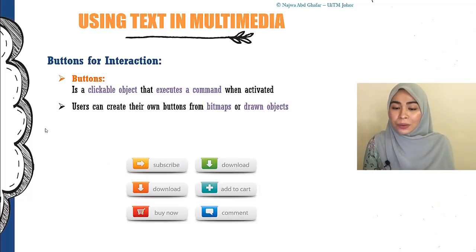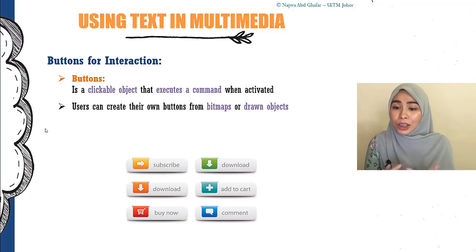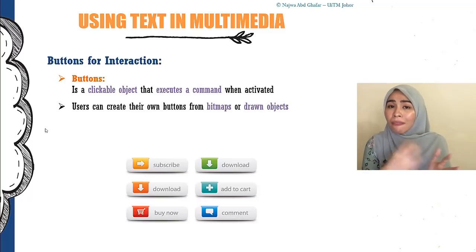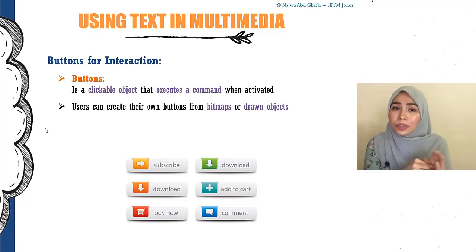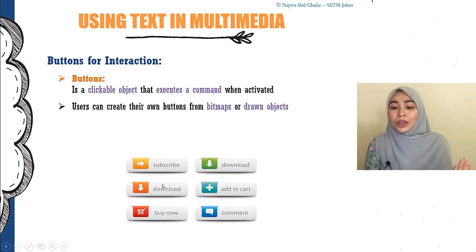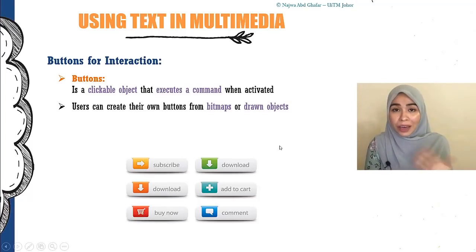Buttons are also important for interaction. A button is a clickable object that executes a command when activated — every button is an object, and if you click on it, something will happen. There is some kind of command activated when the user clicks the button. Users can create their own buttons from bitmaps or drawn objects. Since buttons are images, you can design them however you want, using bitmap or vector graphics. You will learn about graphics in the next chapter.